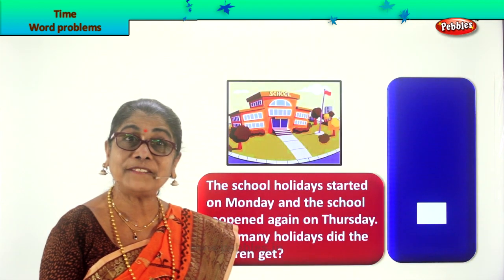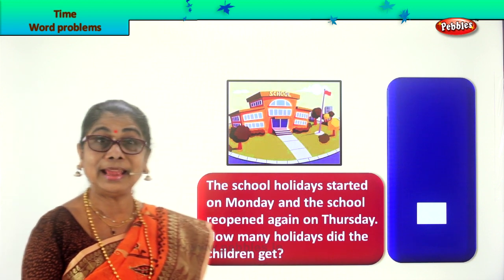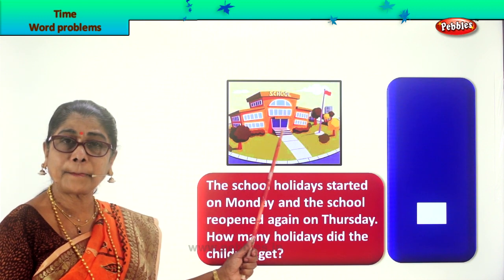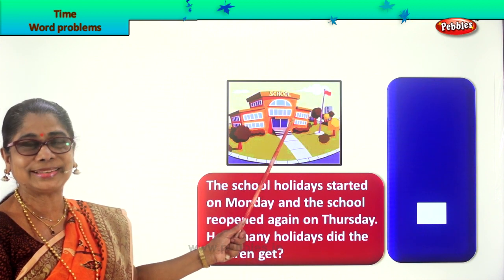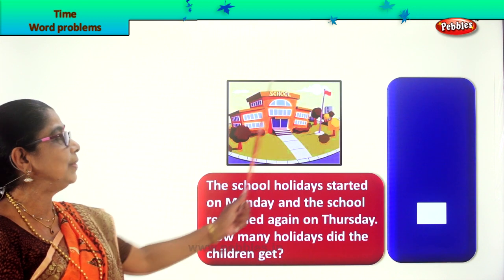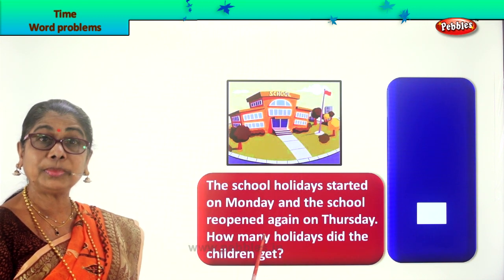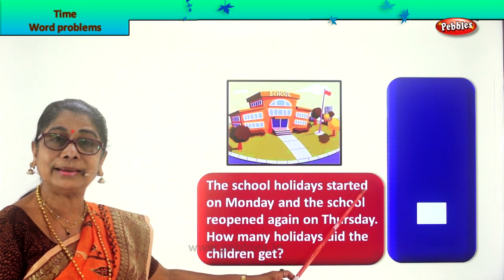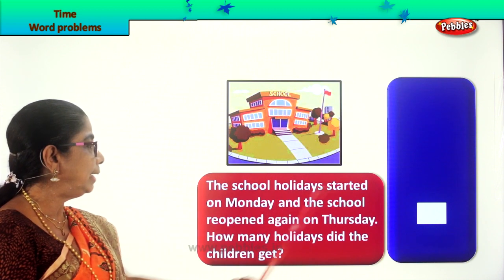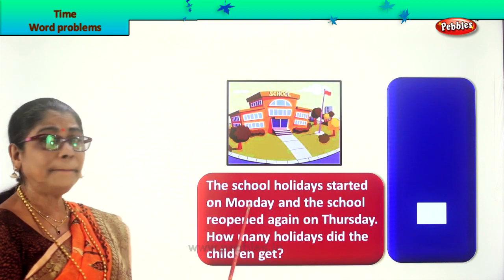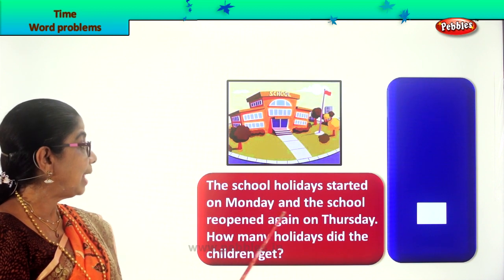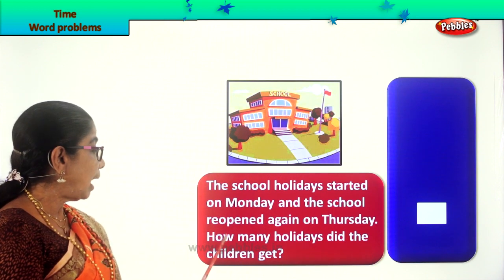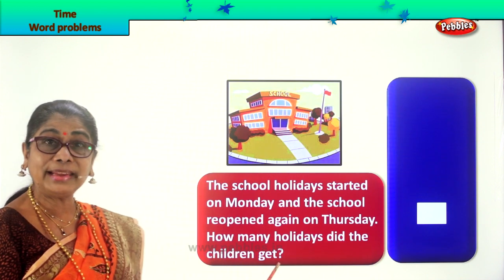Let us look at our first problem. See how colourful it is! What is this? School — your school. So look at your school here. Let us read the problem. The school holiday started on Monday, and the school reopened again on Thursday. How many holidays did the children get?